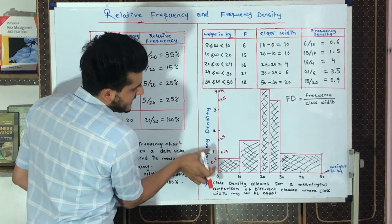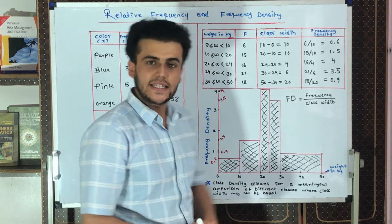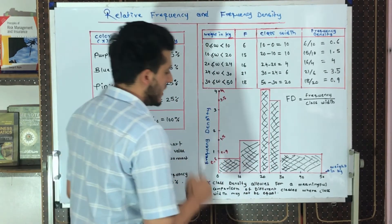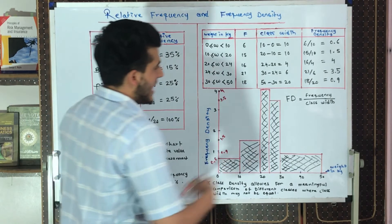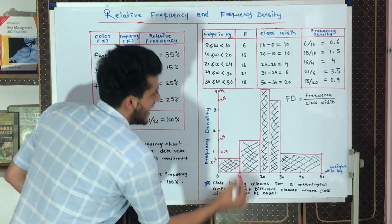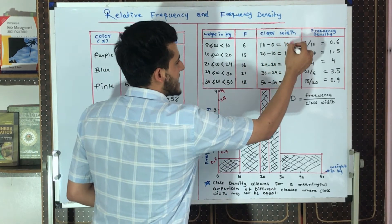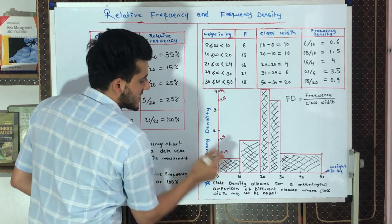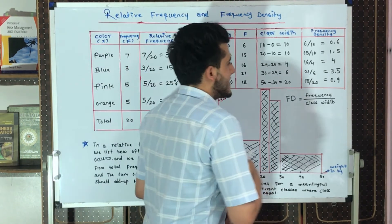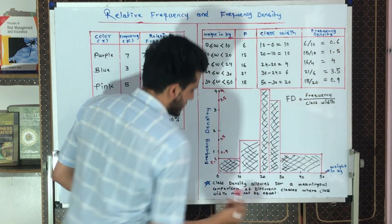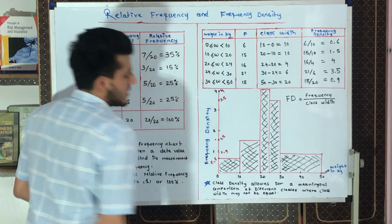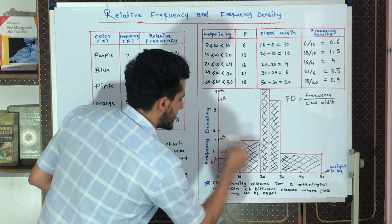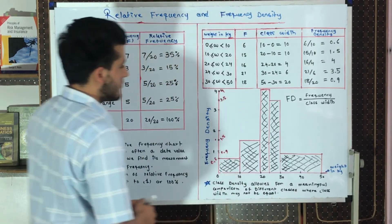We mark intervals of 1 on the frequency density axis. For the first bar: frequency density is 0.6 and class width is 10, so we draw a bar from 0 to 10 at height 0.6. For the second bar: frequency density is 1.5 and class width is also 10, so we extend another bar from 10 to 20 at height 1.5.